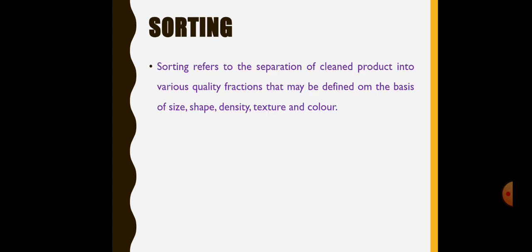The next term is sorting. Sorting refers to the separation of clean product into various quality fractions that may be defined on the basis of size, shape, density, texture and color. There is a meaningful difference between grading and sorting. In sorting, we separate the clean product into various quality fractions depending upon various physical properties like size, shape, density, texture and color. Whereas in grading, we classify the product into various quality fractions depending upon the commercial values and other uses.